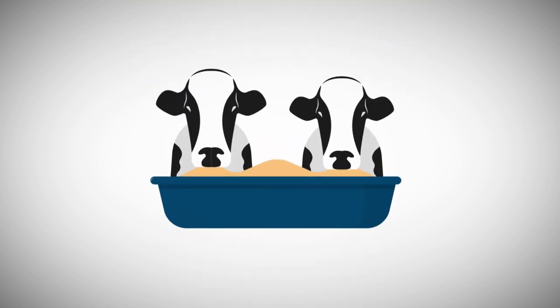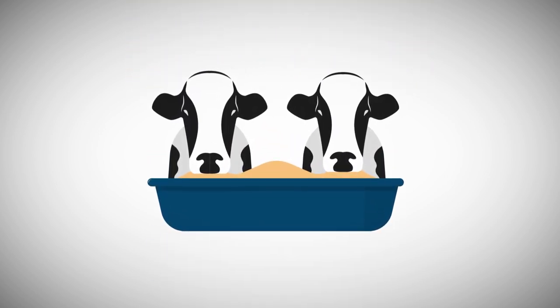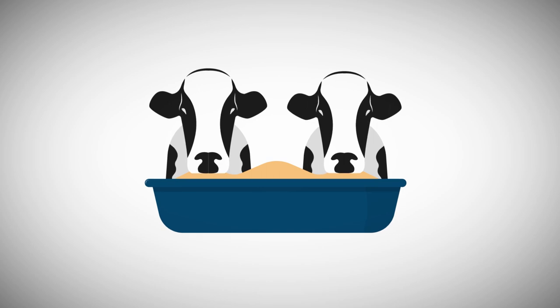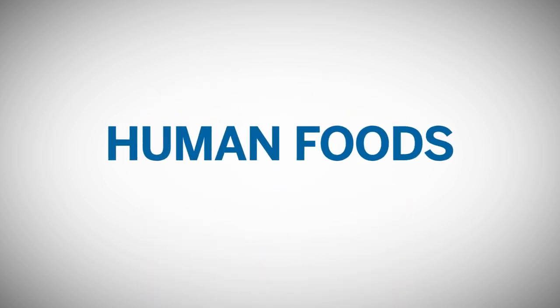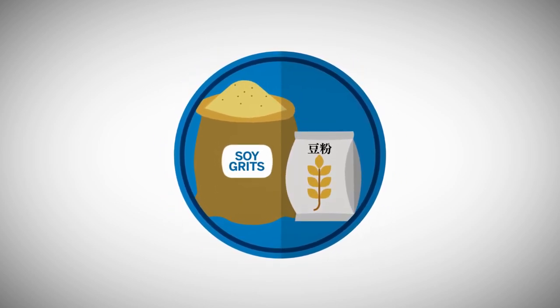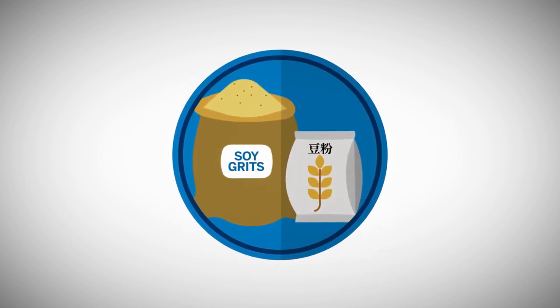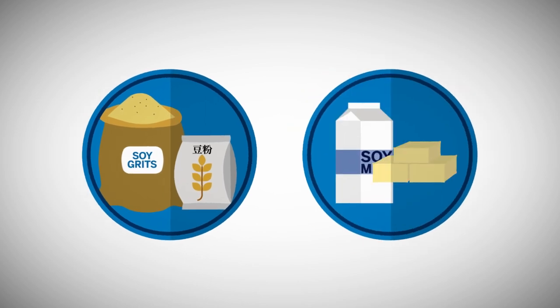Soybean meal is used by feed manufacturers as a prime ingredient in high-protein animal feed for poultry and livestock. It is also further processed into human foods, such as soy grits, flour, and prepared foods, and is a key component in meat or dairy substitutes like soy milk and tofu.